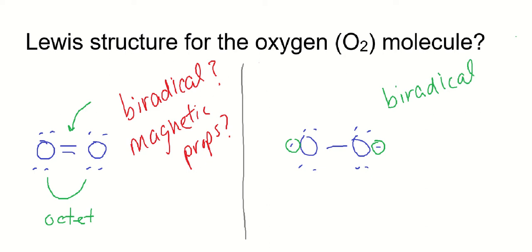Free radicals have unpaired electrons. You may have heard of free radicals in health. They're often reactive molecules because of that unpaired electron.